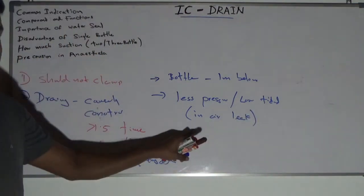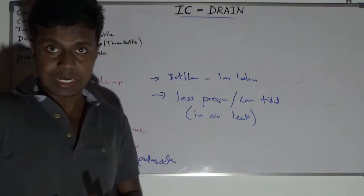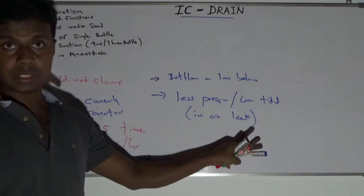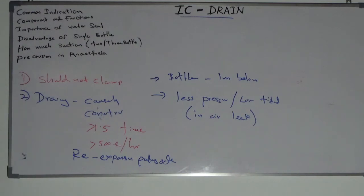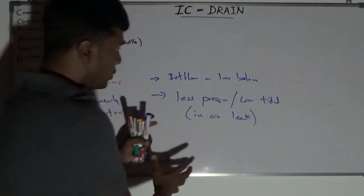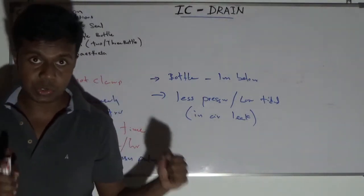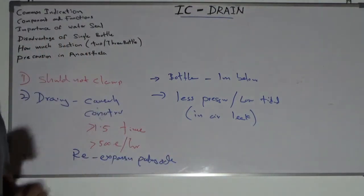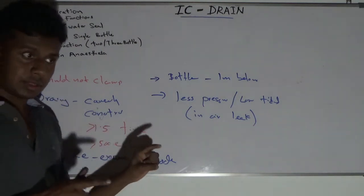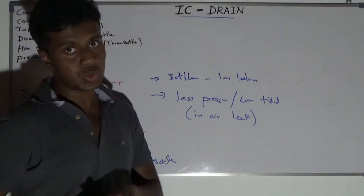Following surgery or following spontaneous bulla rupture and air leak, you have to use less tidal volume and less pressure for ventilation, because if you have high pressure, the air leak will continue and it will not heal properly. Because of the problems with the bulky three-bottle system, the same concepts are incorporated in a multifunction IC bottle system. You can use the multifunction IC bottle system instead of the three-bottle system to have better outcomes and better drainage.